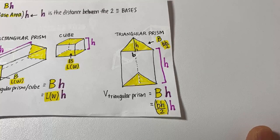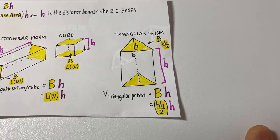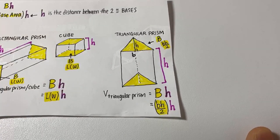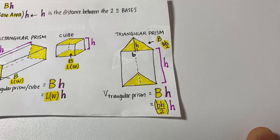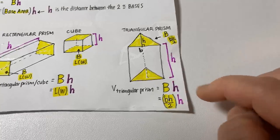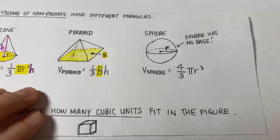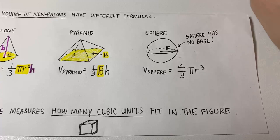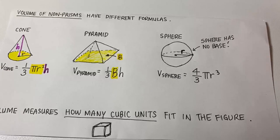Volume of a triangular prism: base times height divided by two, times H.